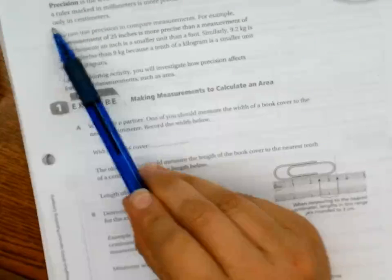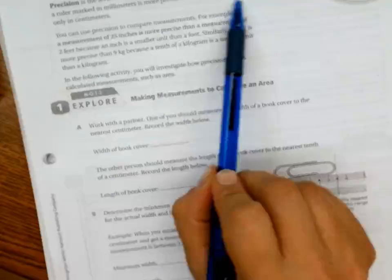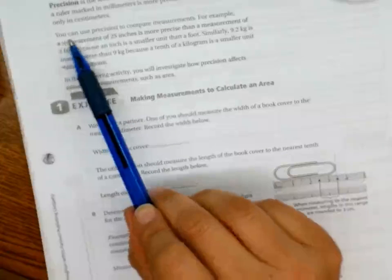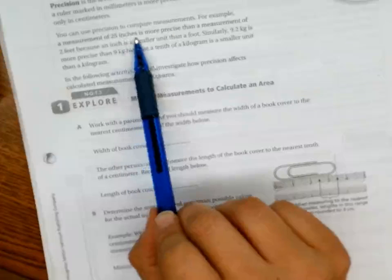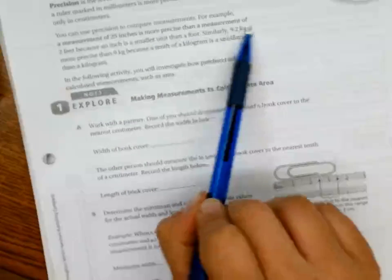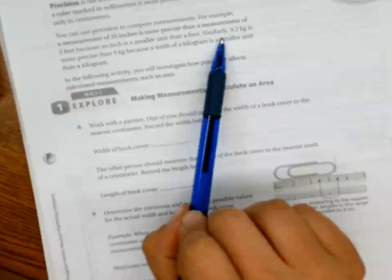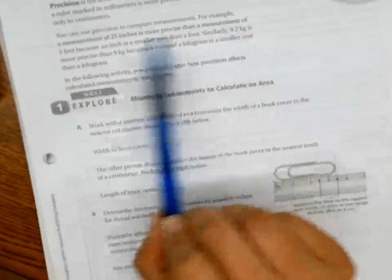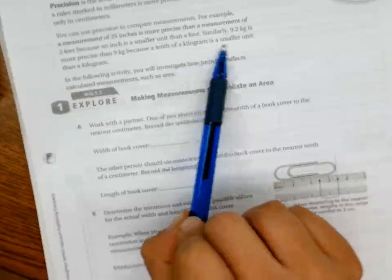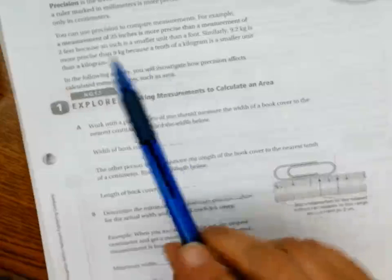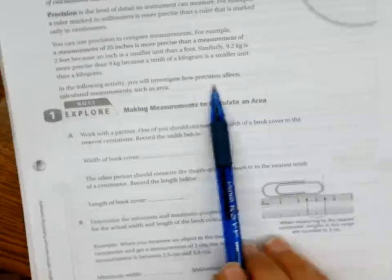So let's look at this. Precision is the level of detail an instrument can measure. For example, a ruler marked in millimeters is more precise than a ruler marked in only centimeters. You can use precision to compare measurements. For example, a measurement of 25 inches is more precise than a measurement of 2 feet because an inch is a smaller unit than a foot. Similarly, 9.2 kilograms is more precise than 9 kilograms because a tenth of a kilogram is a smaller unit than a kilogram.